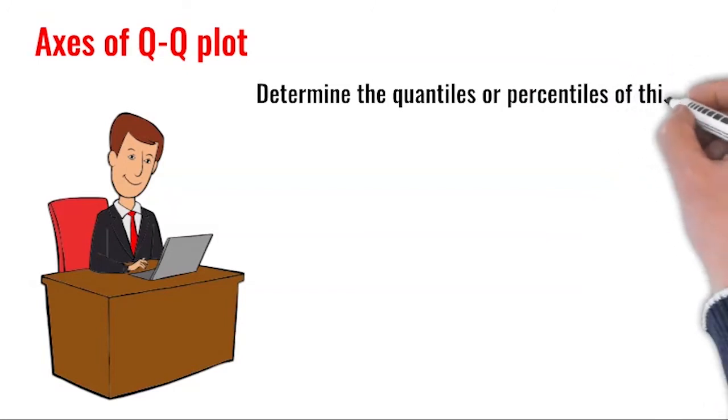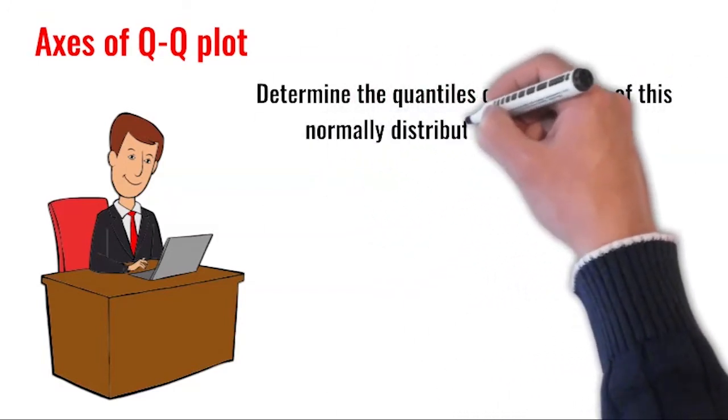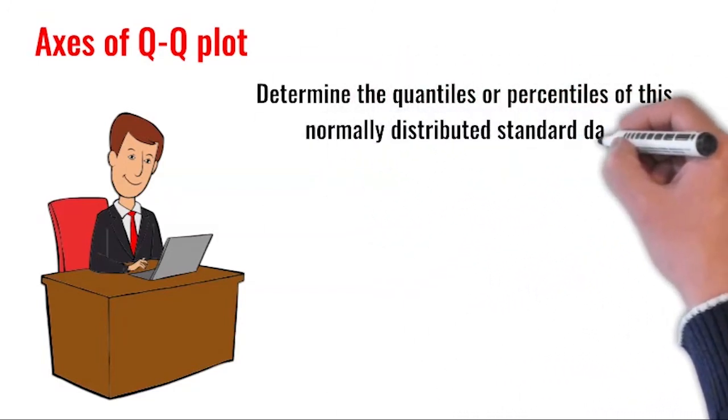If the data is not normally distributed, the line will deviate from the straight track and signal different scenarios.